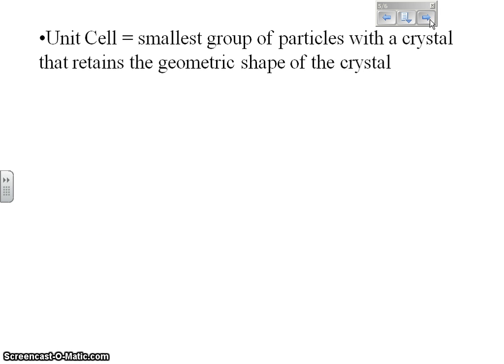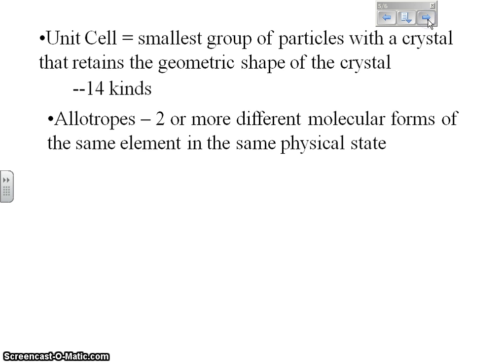A unit cell is the smallest group of particles with a crystal that retains the geometric shape of that crystal. So by breaking down a crystal, that smallest part that retains that same overall shape of the crystal is called a unit cell. There are 14 kinds of unit cells.